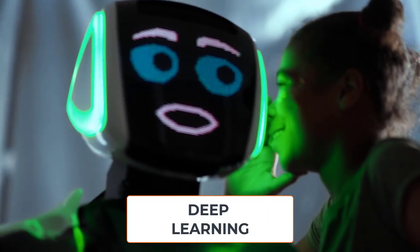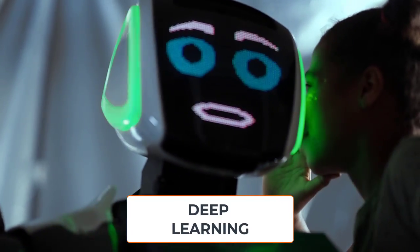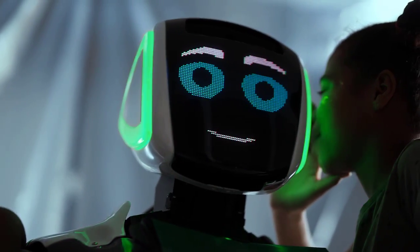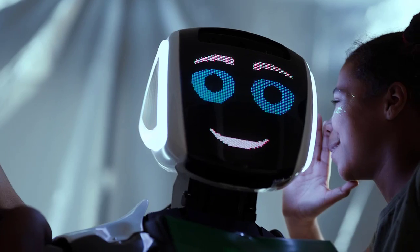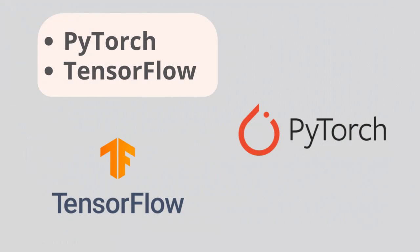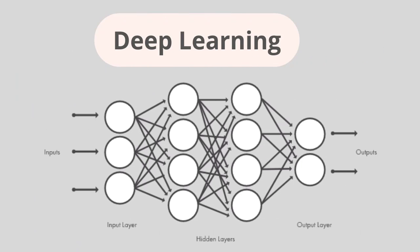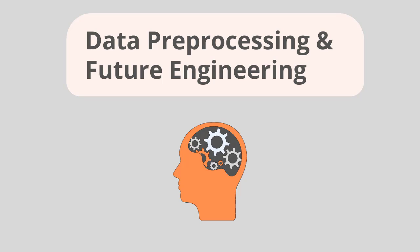Then you can move on to deep learning, which has already revolutionized many AI applications. In deep learning, you need to learn about neural networks and deep neural networks such as CNNs and RNNs. You can also pick up frameworks like PyTorch or TensorFlow. Deep learning is particularly useful when complex patterns or representations need to be learned.